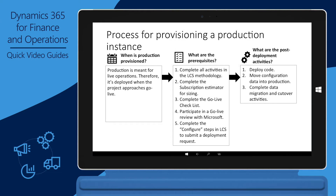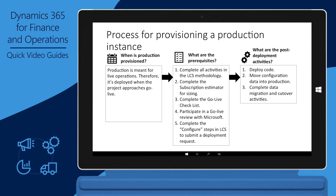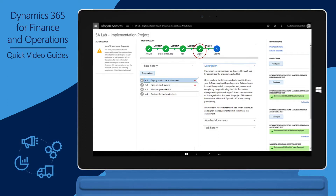In this video, we'll look at the process for provisioning a production instance of Microsoft Dynamics 365 for Finance and Operations. This diagram shows information about timing, prerequisites, and key activities after production is deployed. You should request a production environment after user acceptance testing has been completed and signed off by business users.